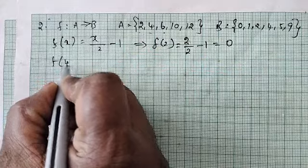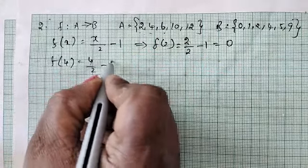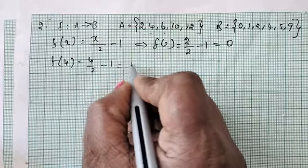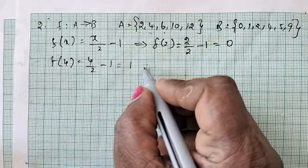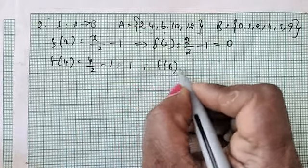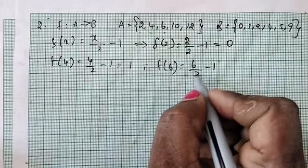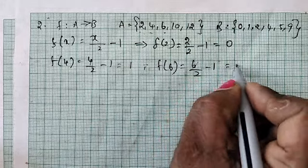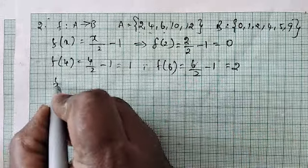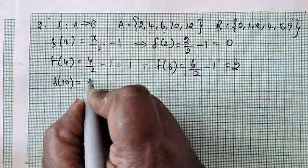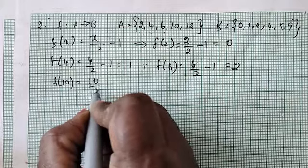Next f(4) equal to 4 by 2 minus 1, so 2 minus 1 equal to 1. Next f(6) equal to 6 by 2 minus 1, so 3 minus 1 equal to 2. Next f(10) equal to 10 by 2 minus 1, 5 minus 1 is 4.